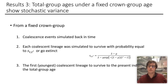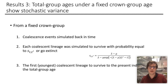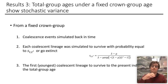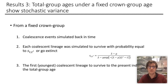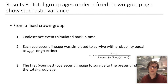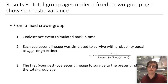For the third set of results, we flip the analysis around and maintain a fixed crown group origin to estimate total group origins. To do this, we simulate coalescence events backwards in time, drawing waiting times from an exponential distribution based on the speciation rate. Each coalescent lineage is estimated to survive with a probability given by a specific expression, and the youngest coalescent lineage that survives to the present represents the age of the total group for that simulation.